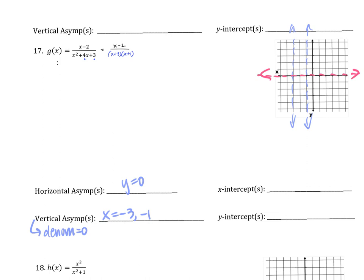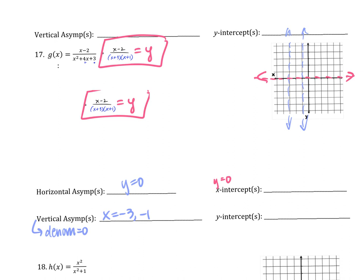How do we find those x-intercepts? When your y is zero. Thank you. Here was my equation when we factored it. If my y is zero, what do I actually care about? I only really care about the top because I'm going to do zero multiplied by that denominator. So I would just have my x minus two equals zero. What do we got? X is two.